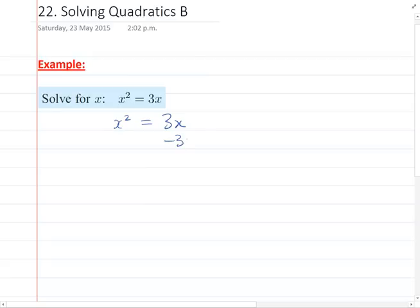The way we're going to do that is by subtracting 3x from both sides. So that's going to leave us with x squared minus 3x equals 0.